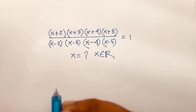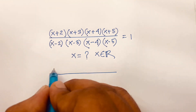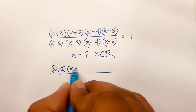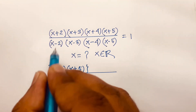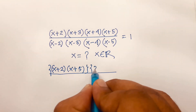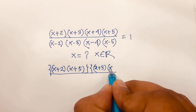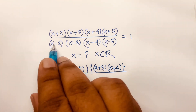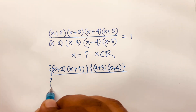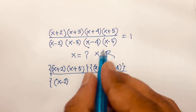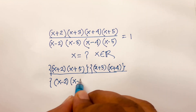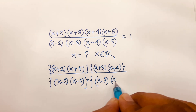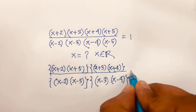Let us start. First of all, I can say here is x plus 2 times x plus 5, and here is x plus 3 times x plus 4, over x minus 2 times x minus 5, and x minus 3 times x minus 4, is equal to 1. I just change the place.